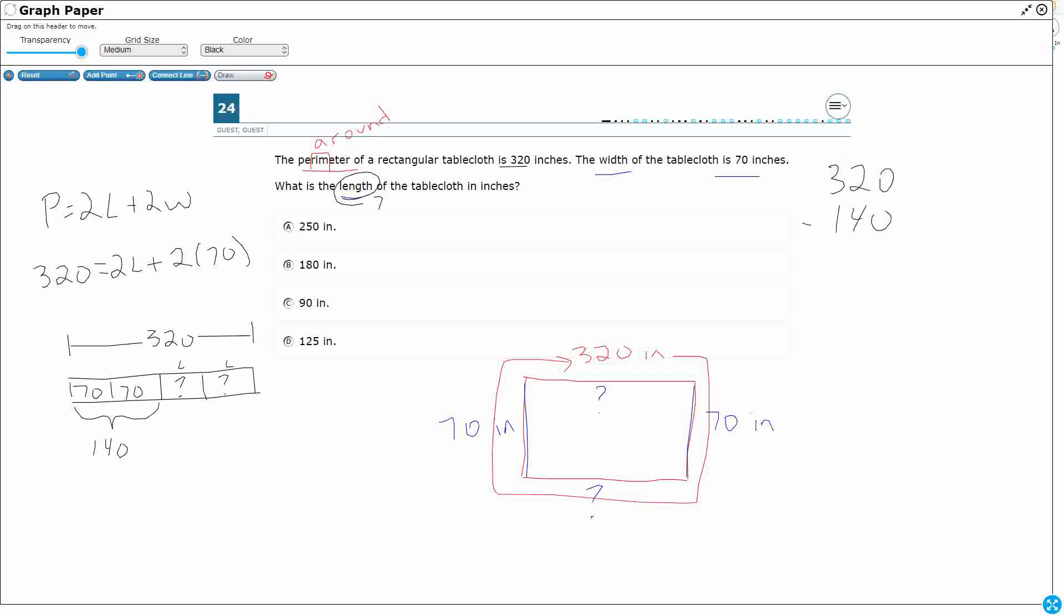320 minus 140. So let's subtract there. We're going to regroup and make that a 12. So that's going to be 180. Now I see that here, but watch what I did. I just found the quantity for both lengths. Because if I take my 180 and my 140, that's going to add back up to my 320. That's my perimeter.